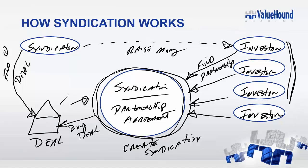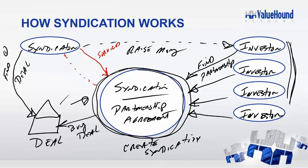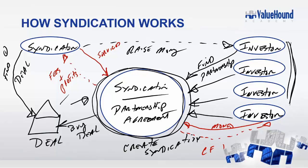I want to show you what the players get. The syndicator provides services, and in return the syndicator gets fees and profits. The investor provides the money, and what comes back to the investor is cash flow plus profits. All the players become part of the syndication to make money — the syndicator makes fees and profits, and the investor essentially rents out their money to get cash flow and profits when the property is sold.